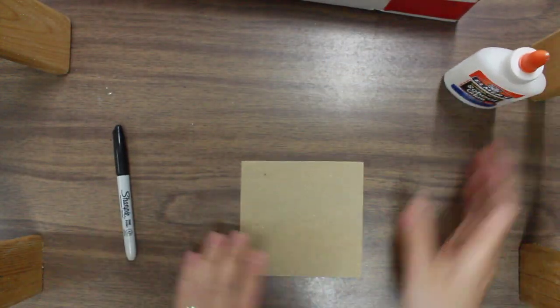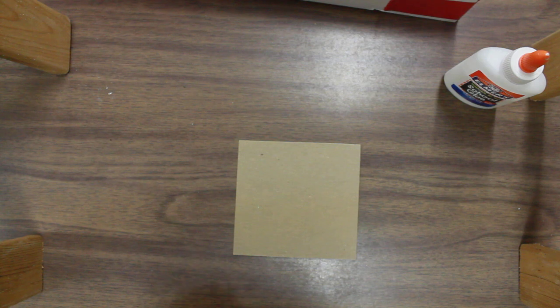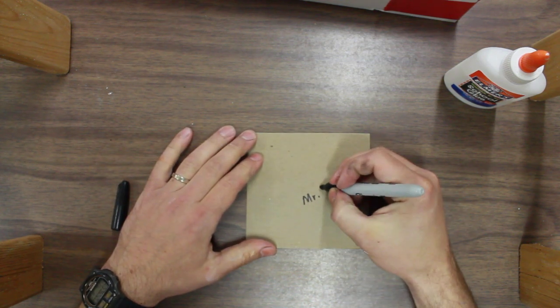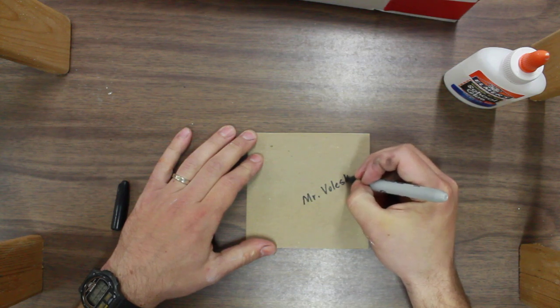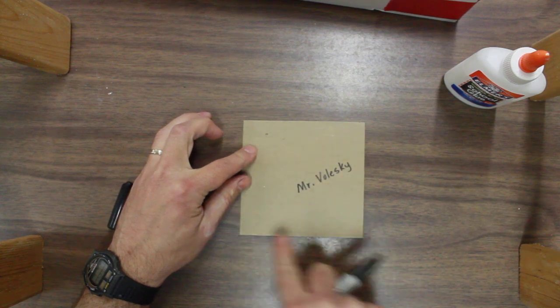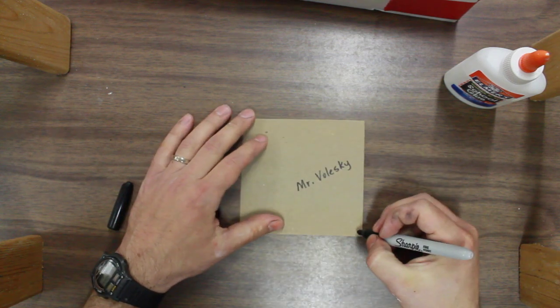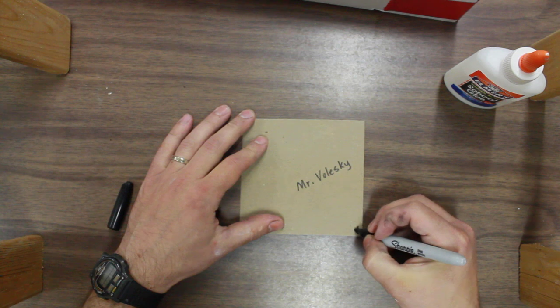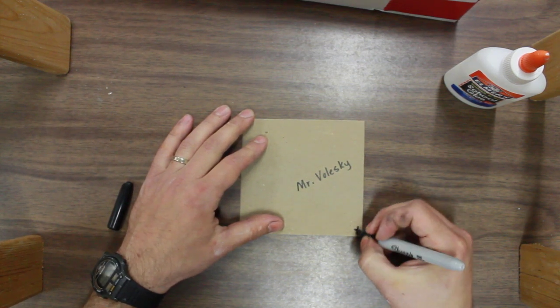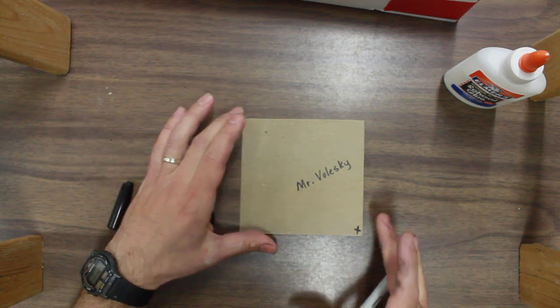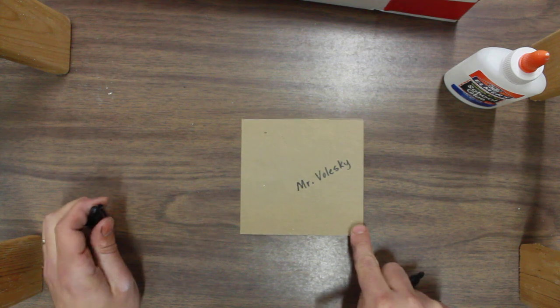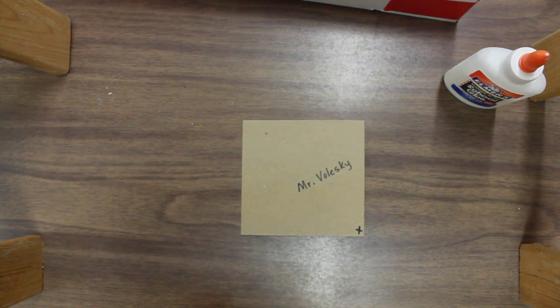So let's get started making it. First thing I want you to do is you're going to write your name with a Sharpie marker so it shows up a little better. I'm going to do this on the back side and then I want you to pick one corner, one of the corners, and I want you to put an X on it. We're going to use that X when we go to print it later on and we're going to be lining it up with that. Just do that in one of the corners so we can use one of those corners for our printing project.